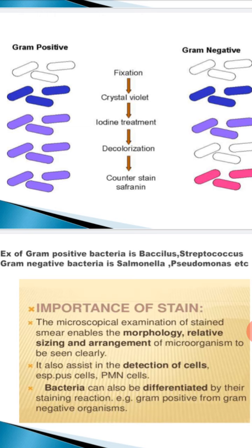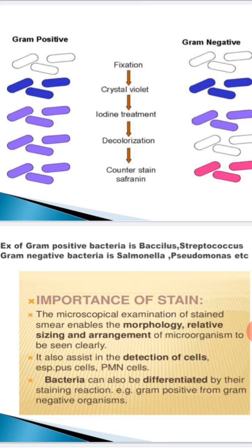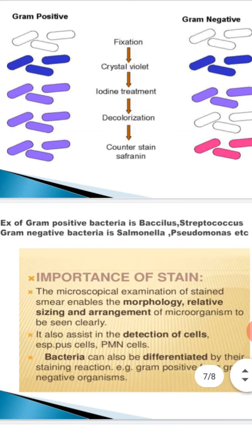When the gram negative bacteria have become colorless, and we do the counter stain with safranin, they take the safranin stain and become red or pink. But the gram positive bacteria, because their peptidoglycan layers are very thick, the complex has been formed and embedded in the layer, so they remain purple. This is the main mechanism explaining why gram positive bacteria remain purple and gram negative bacteria become pink.